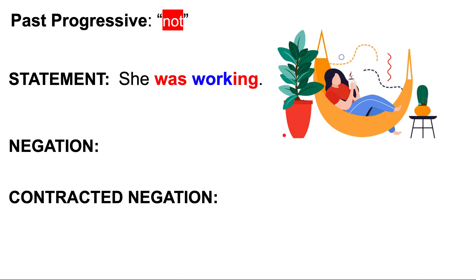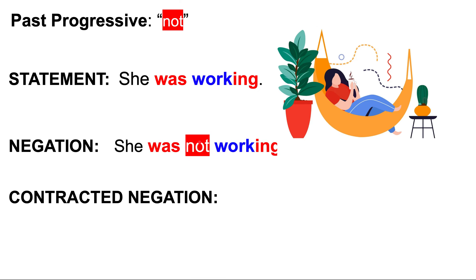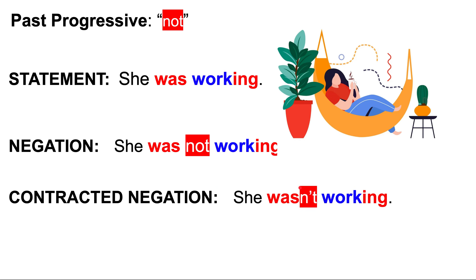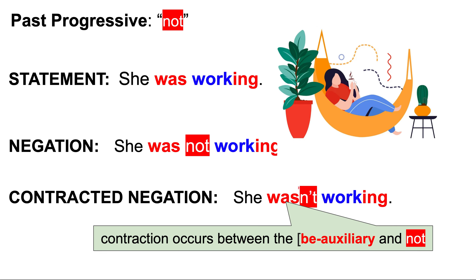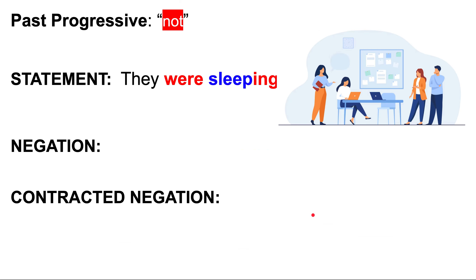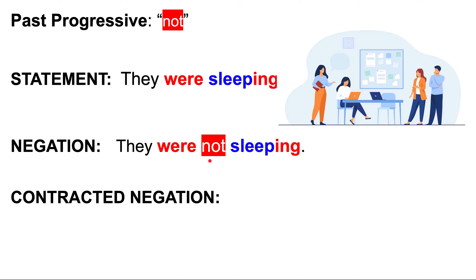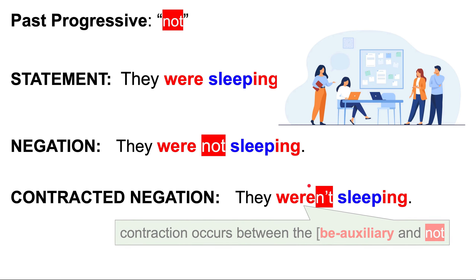Let's look at more examples and contractions. She was working. She was not working. Contracted negation: she wasn't working. The contraction occurs between the BE auxiliary 'was' and 'not' — was + not = wasn't. Another example: they were sleeping. They were not sleeping. Contracted negation: they weren't sleeping. The contraction is were + not = weren't.